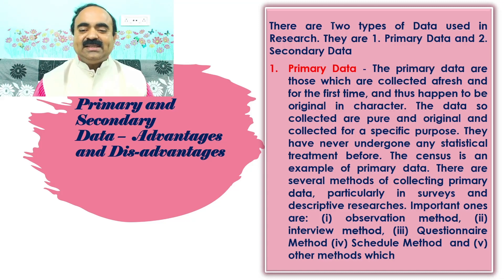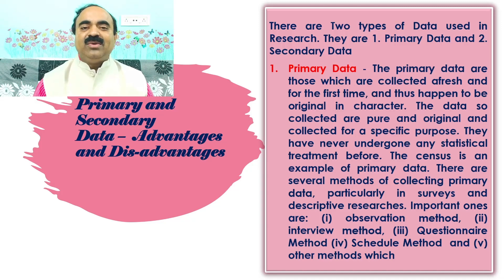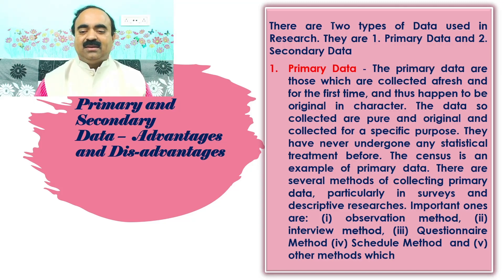They have never undergone any statistical treatment before. The census is an example of primary data. There are several methods of collecting primary data, particularly in surveys and descriptive researches. Important ones are: 1, observation method; 2, interview method; 3, questionnaire method; 4, schedule method; and 5, other methods.